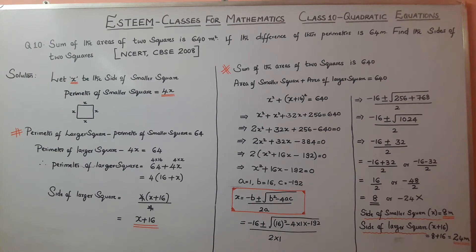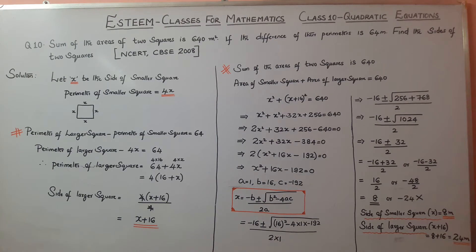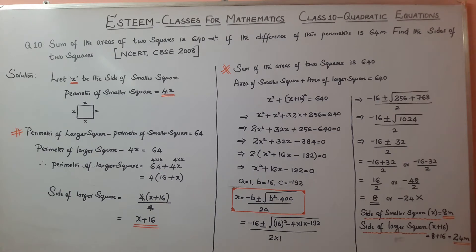Let x be the side of the smaller square. The perimeter of the smaller square is 4x. The difference of the perimeters is 64 meters: perimeter of larger square minus perimeter of smaller square is equal to 64.